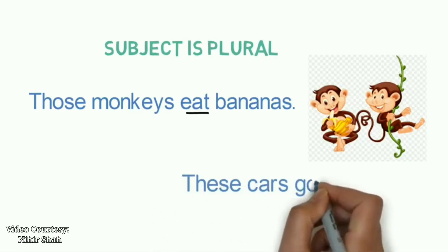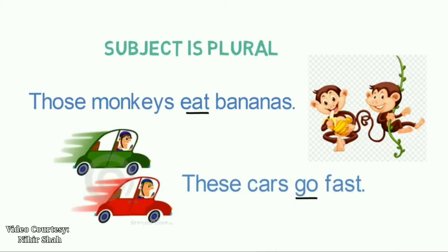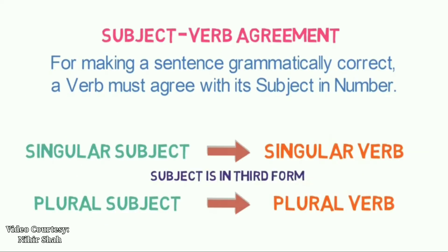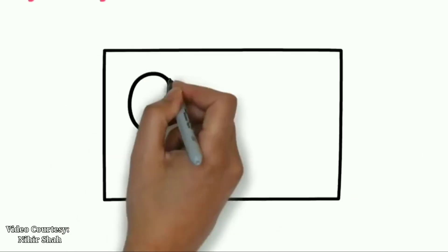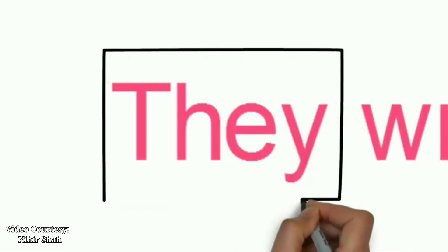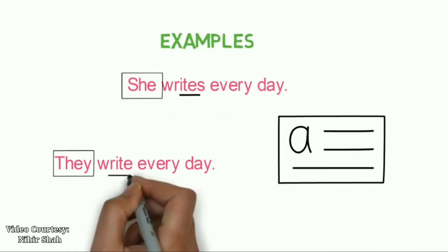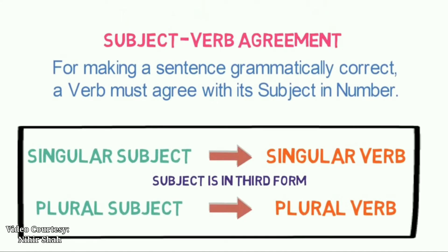'These cars go fast.' Here, the subject is 'cars,' which is plural, so the verb is also in plural form — 'go.' Let me give you another example: 'She writes every day.' Here, 'she' is singular, so the singular verb 'writes' is used. And: 'They write every day.' Here, 'they' is plural, so the plural verb 'write' is used. This is the most general rule — please remember it.